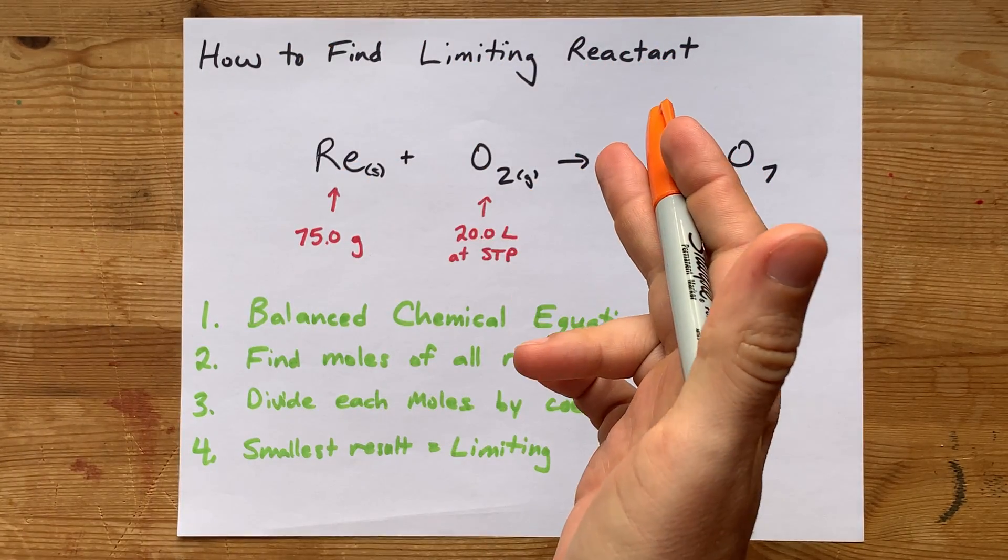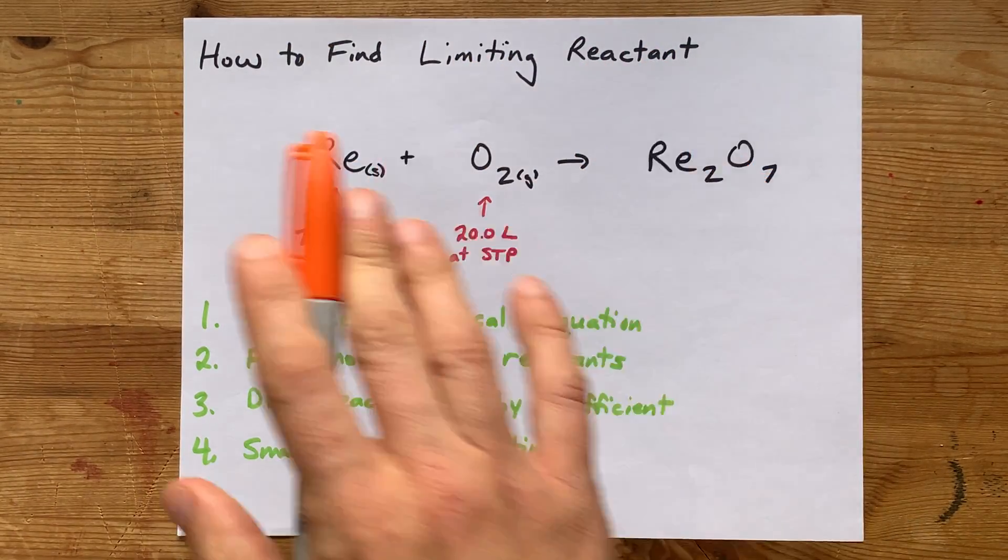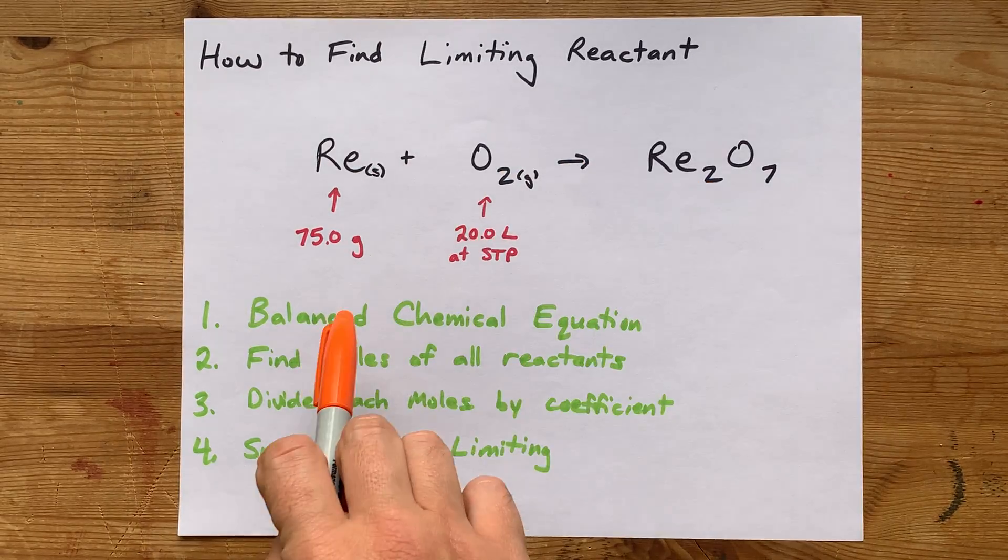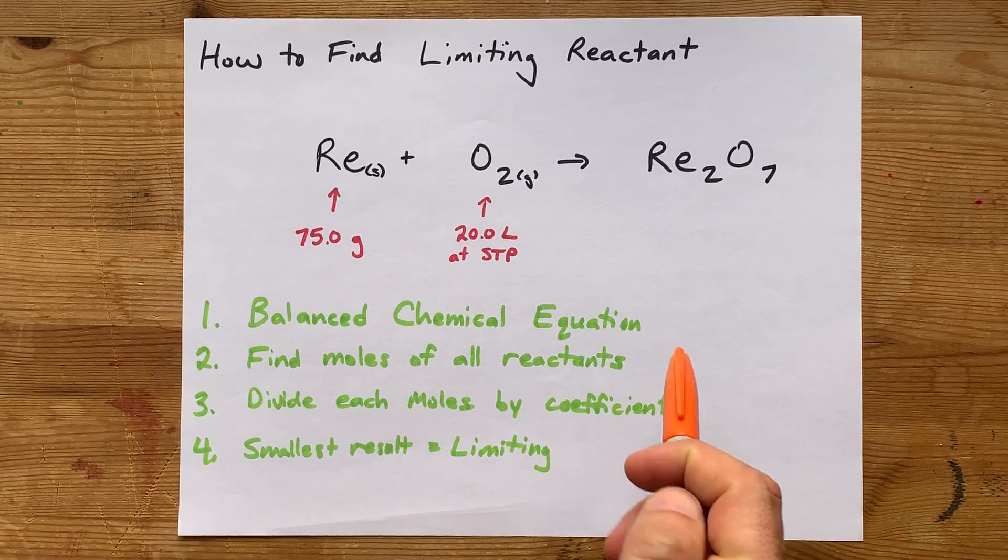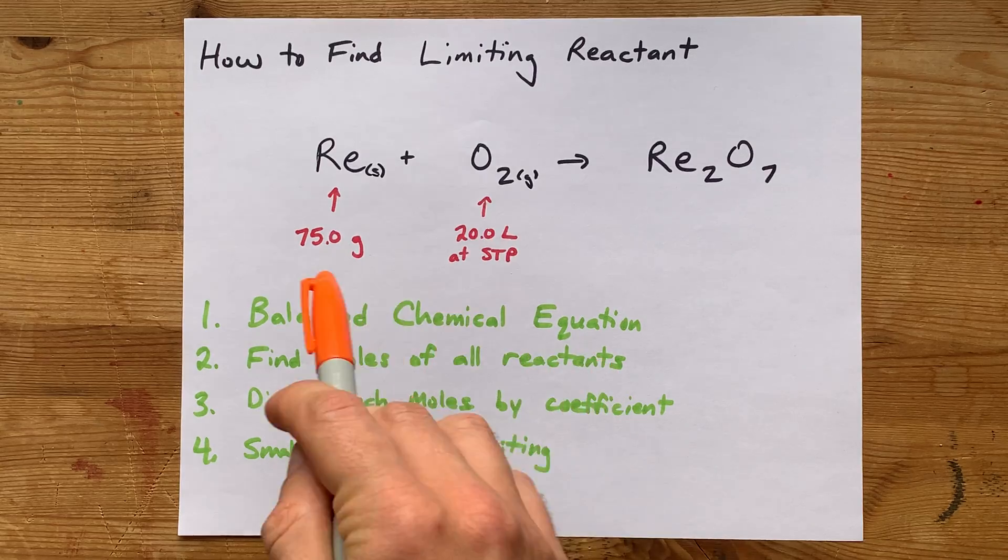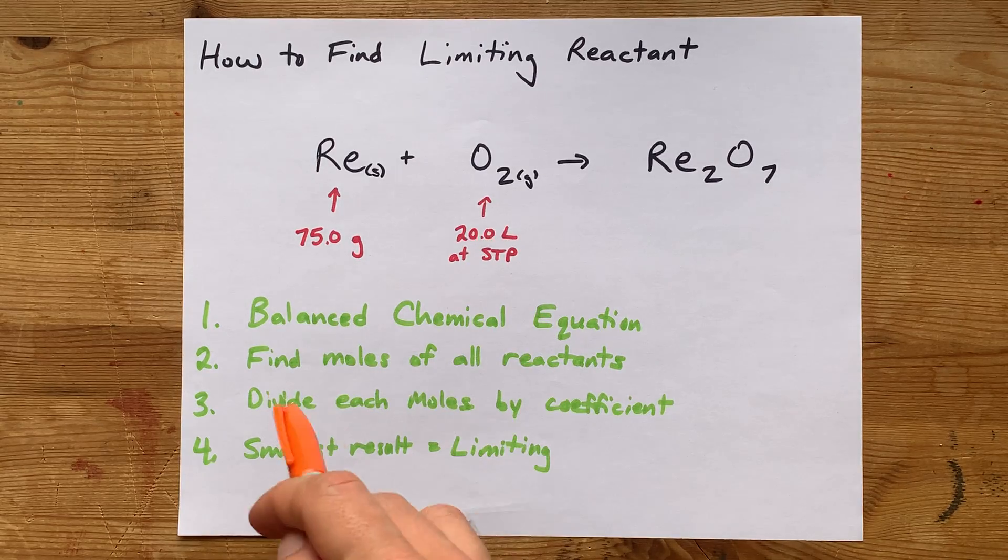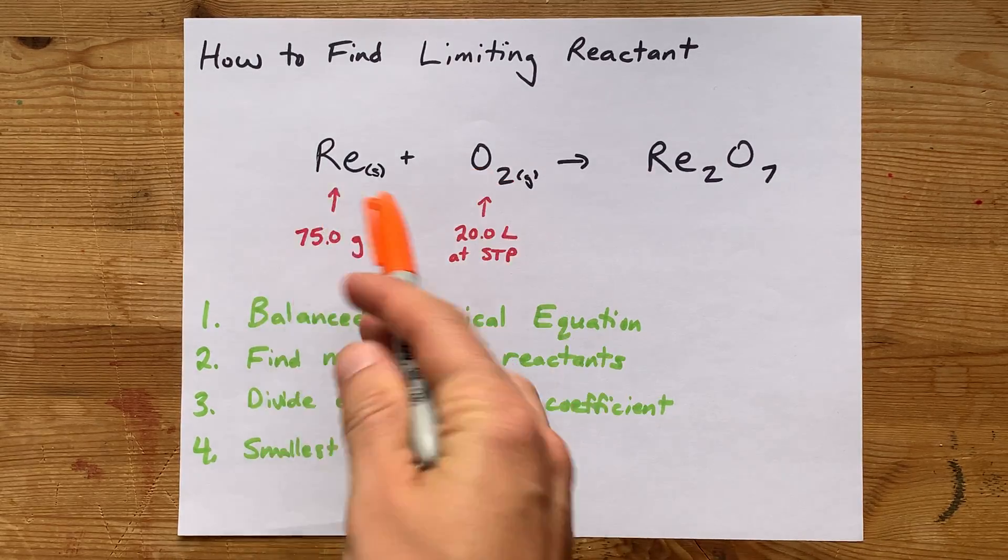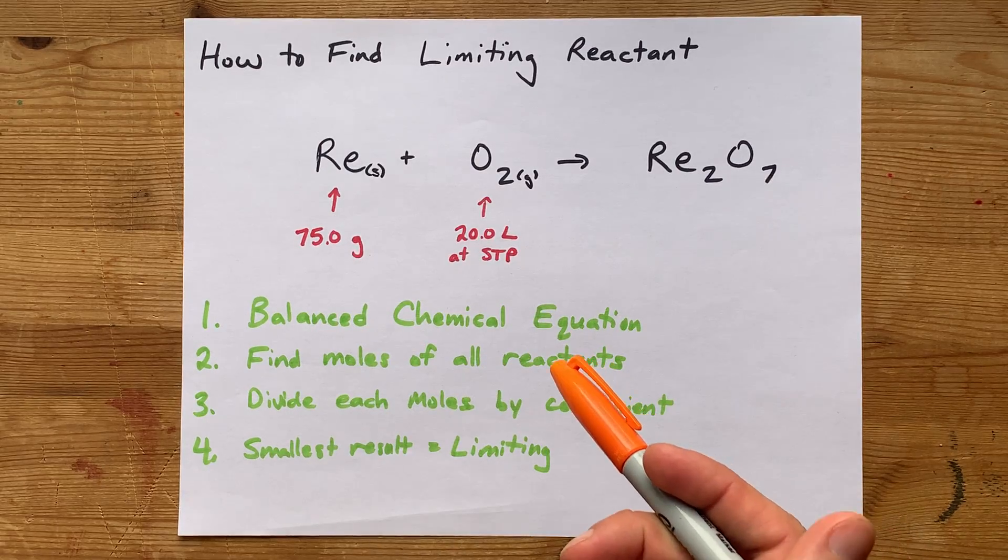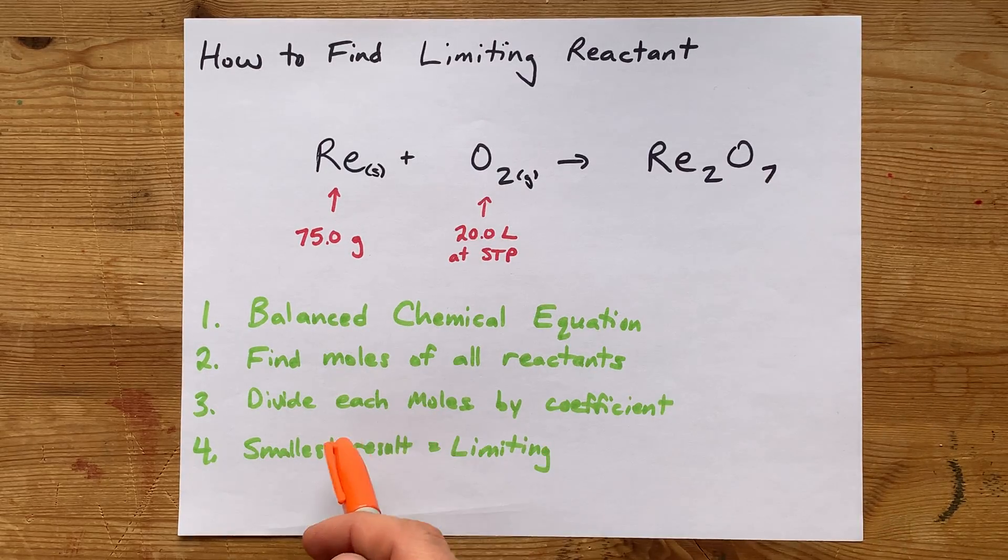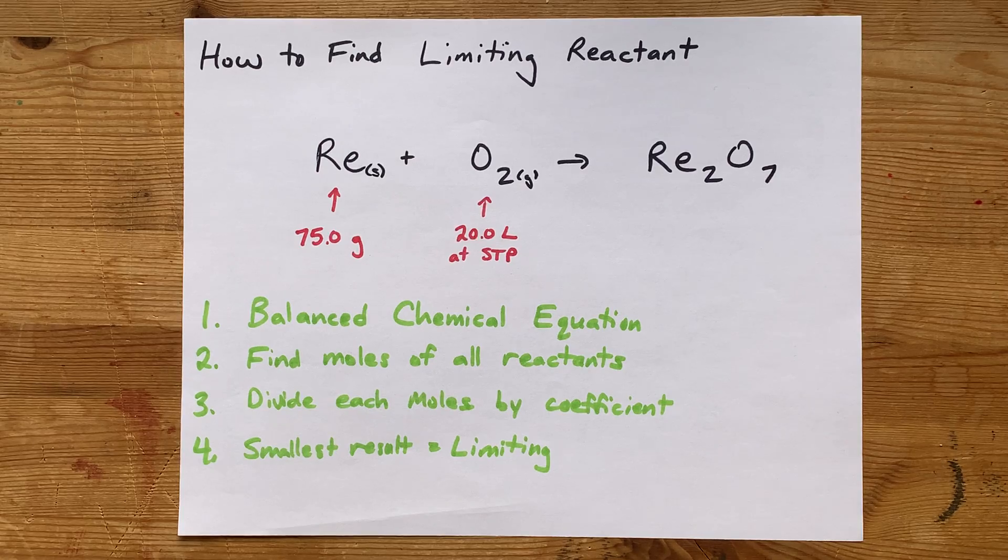How do you find the limiting reactant? The fastest way to answer that question is: get a balanced chemical equation, find the number of moles of all the reactants, divide each of those moles by the coefficient from the balanced chemical equation, and then of those results, the smallest one corresponds to the limiting reactant.